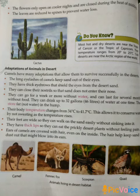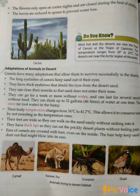Their body temperature changes from 34 degrees Celsius to 41.7 degrees Celsius. This allows them to conserve water by not sweating as the temperature rises. Their feet are wide so they can walk on the sand easily without sinking into it. They have thick lips so they can eat thorny desert plants without feeling pain. The ears of camels are covered with hair even on the inside, which helps keep sand or dust out that might blow in. This much for today. Next video, we will discuss about mountains. Thank you.